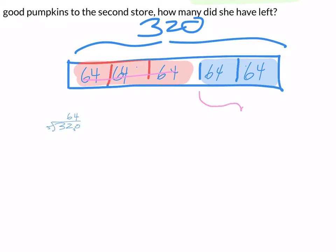These are the pumpkins that are hopefully going to the second store. So I can see right away that 64 times two is 128 pumpkins.